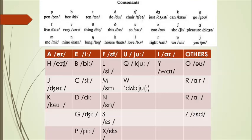And just to summarize, we have consonants: P for pen, B for be, T for ten, D for do, J for chair, J for just, K for can, G for go, F for five, V for very, F for thing, D for this, S for so, Z for zoo.